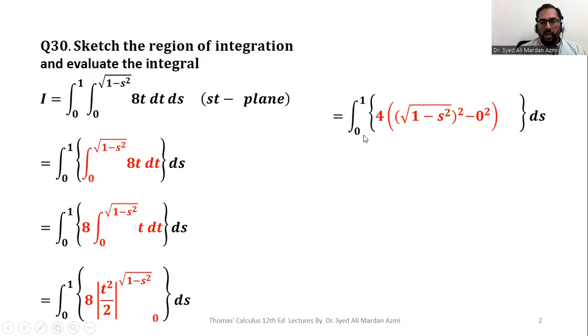So in this step, we have limit from 0 to 1, 4 into 1 minus s square, ds. 4 is constant. We have taken it outside and the next step will be integrated. Integration of 1 will be s and integration of s square will be s cube over 3.